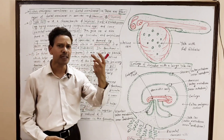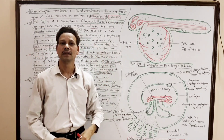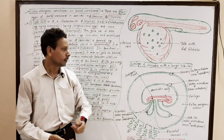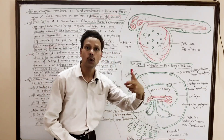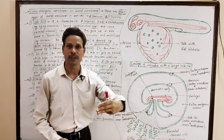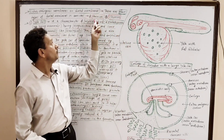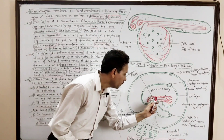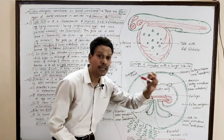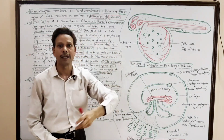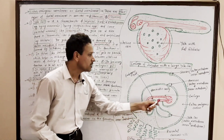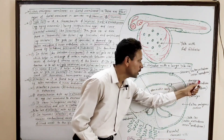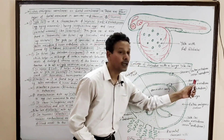In case of amniotes like reptiles, birds, and mammals, these extra embryonic coats are of four types. The first type is the amnion — here the embryo is surrounded by this inner arc which is an umbrella-like coat. This amnion is formed by outer mesoderm and inner ectoderm.